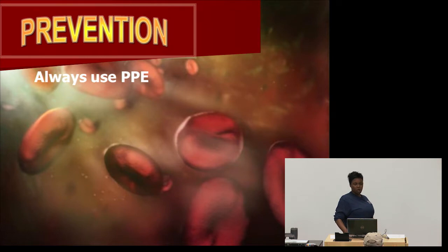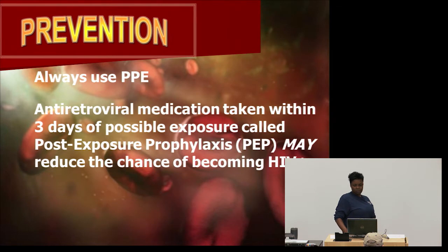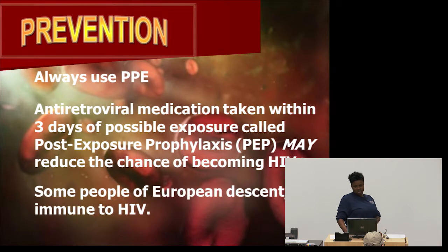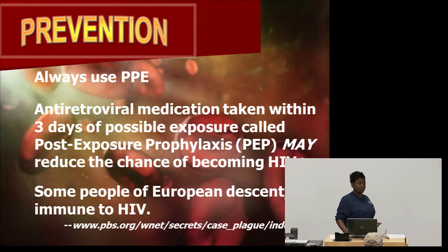How to prevent AIDS: always use PPE. There is an antiretroviral medication called PEP that can be taken within three days of possible exposure and may reduce your chances of becoming HIV positive. Interestingly, some people of European descent are immune to HIV. The risk to FPO is minimal.